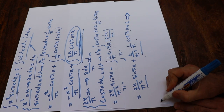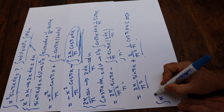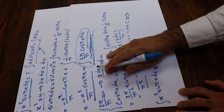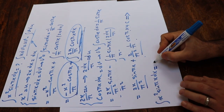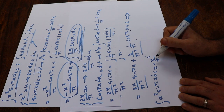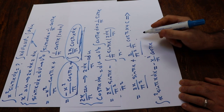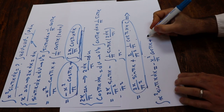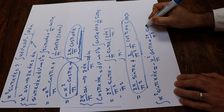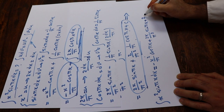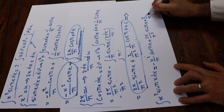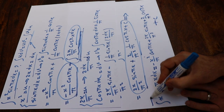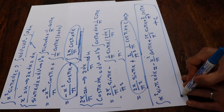Therefore, one can conclude that the integral of x² sin(πx) dx, which was given in the question, will be equal to minus x² divided by π times cosine(πx), plus 2x divided by π² times sine(πx), plus 2 divided by π³ times cosine(πx), plus C, which is the constant of integration. And that is the solution to your integral.